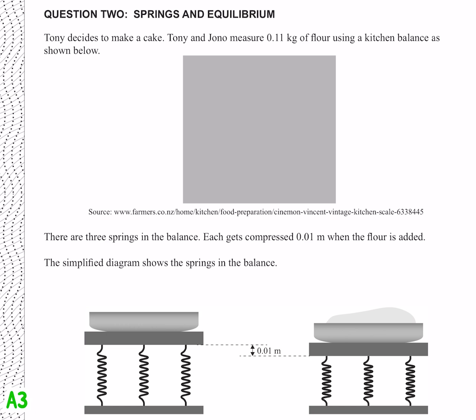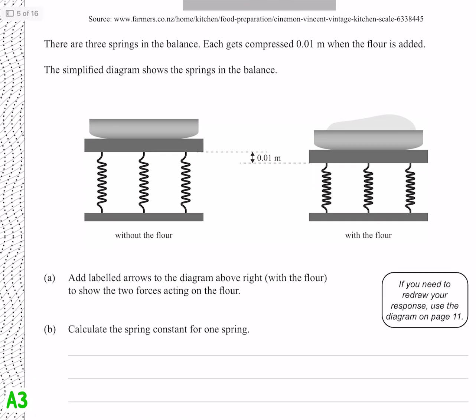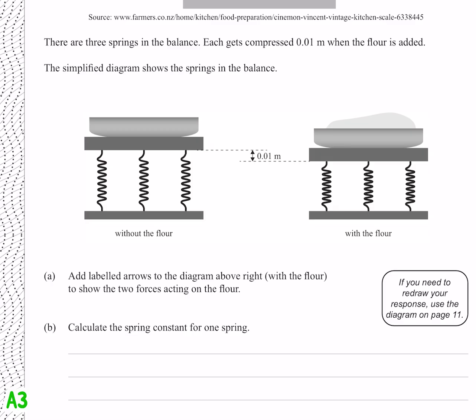Looks like Tony is now doing a bit of baking, another top tier picture from NCEA. Add labelled arrows to the diagram above to show the two forces acting on the flower. We're going to have a support force, and we're going to have a gravity force, and we just need to make sure that they're both about equal.